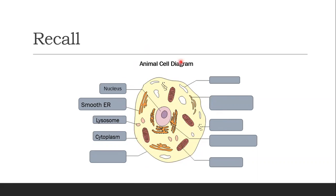The outer layer of the animal cell — I call this the guard of the animal cell. It controls what comes in and goes out of the cell. We call this the cell membrane. Next, these small white spaces you sometimes find in animal cells and sometimes not — that is your vacuole. And this important structure on the outer layer of the animal cell is called the Golgi apparatus.